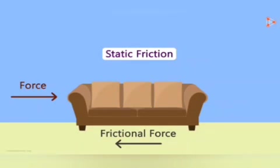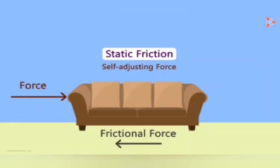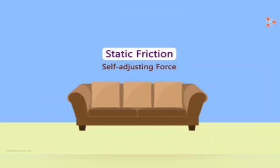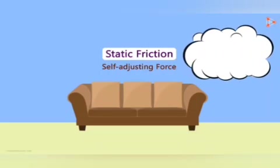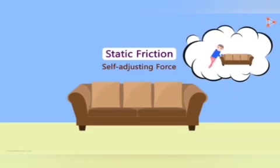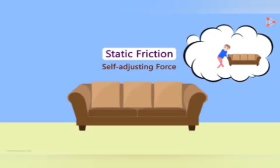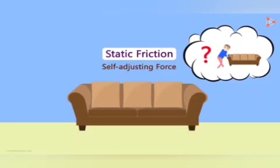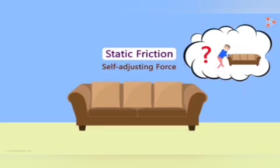This force is static friction, and it's a self-adjusting force. As you increase your force of push, the force of static friction increases too, and the forces remain balanced. But after a few seconds, the sofa begins to move. What happens to the static friction then? Let's discuss this with the help of a simple graph.